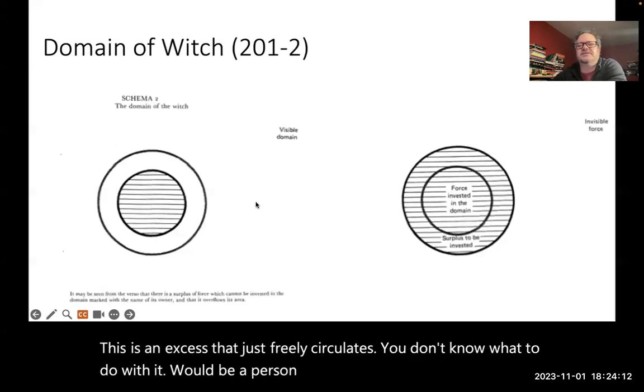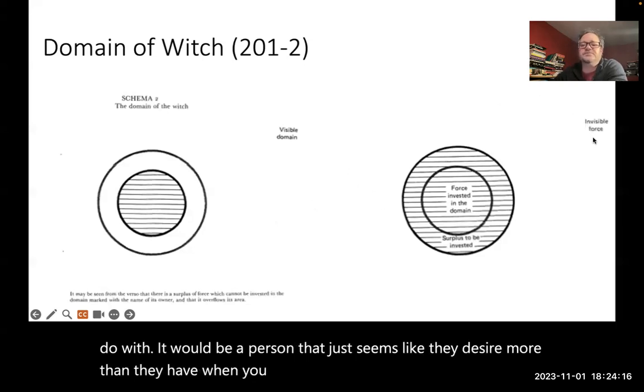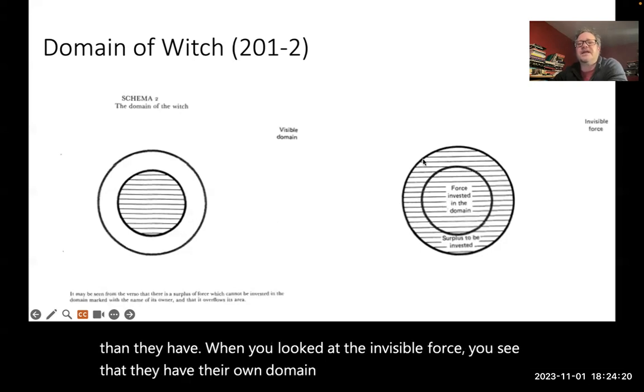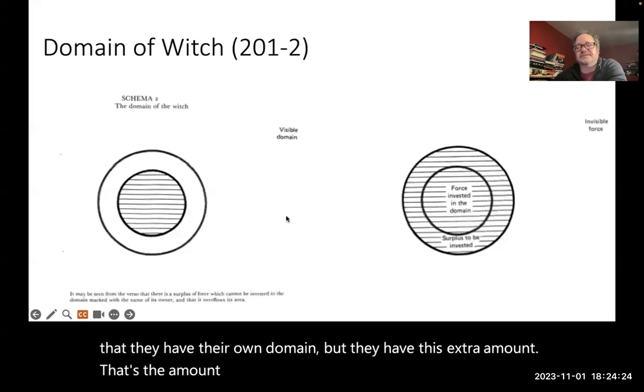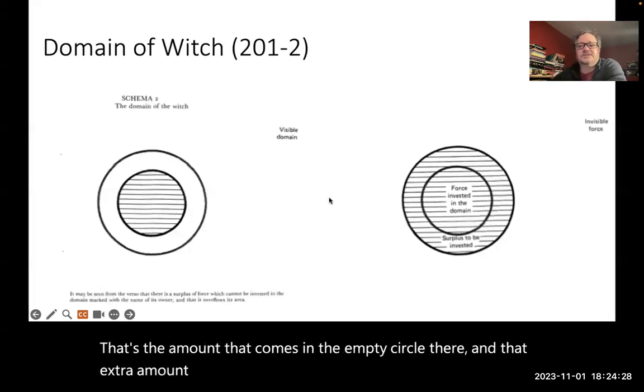It would be a person that just seems like they desire more than they have. When you look to the invisible force, you see that they have their own domain, but they have this extra amount. That's the amount that comes in the empty circle there. And that extra amount, that is the force that is used in magic. That's the force that can be deployed.